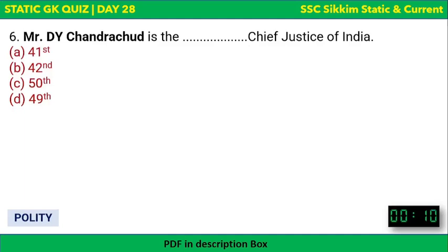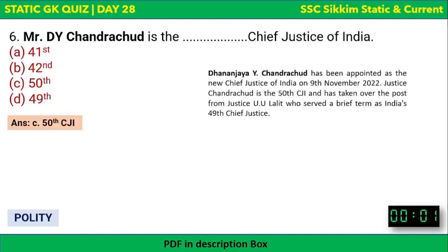Mr. D.Y. Chandrachud is the current Chief Justice of India. He is which Chief Justice? Before him it was Uday Umesh Lalit (UU Lalit), and before him it was N.V. Ramana. D.Y. Chandrachud is the 50th CJI of India. N.V. Ramana was the 48th CJI, UU Lalit was the 49th CJI, and now D.Y. Chandrachud is the current Chief Justice of the Supreme Court of India.